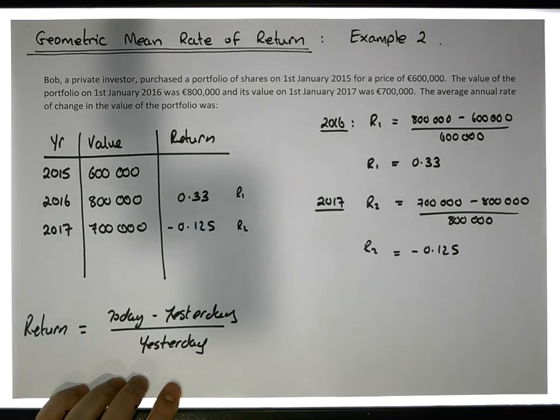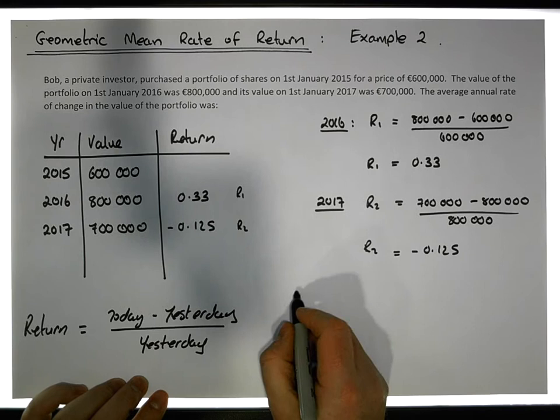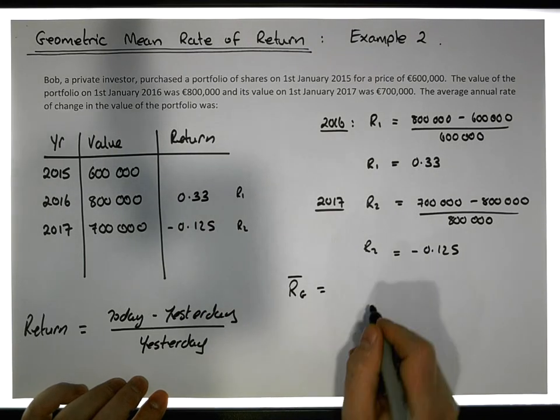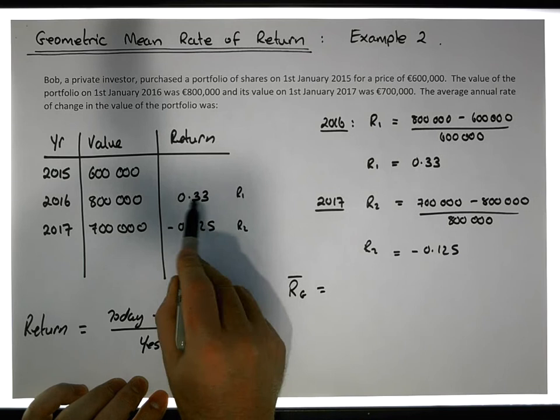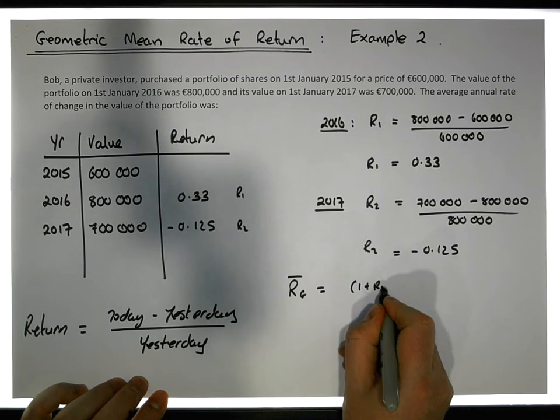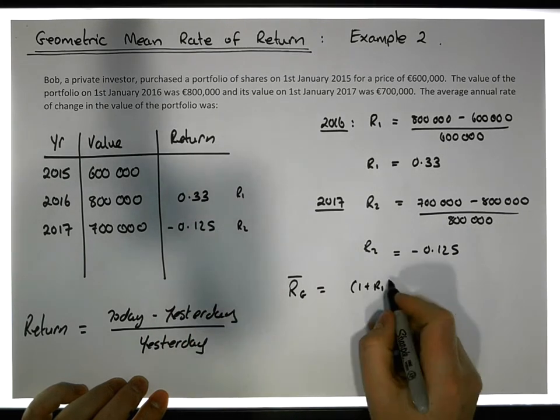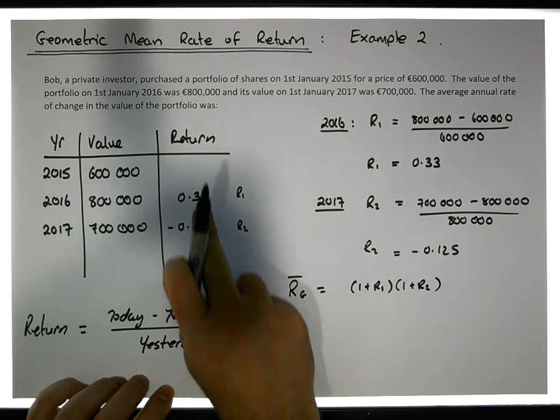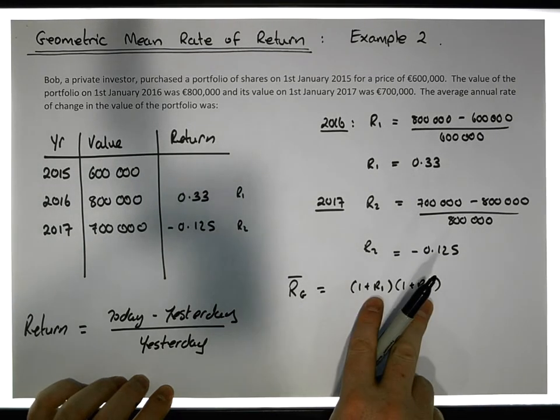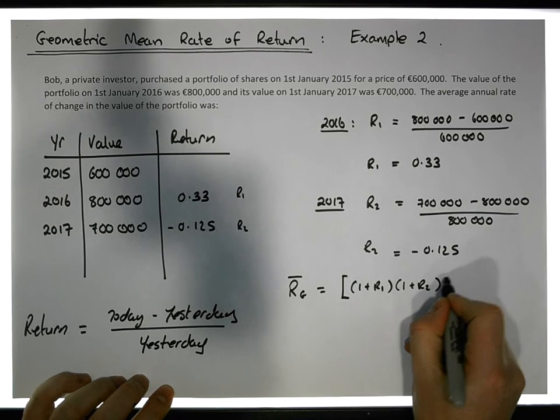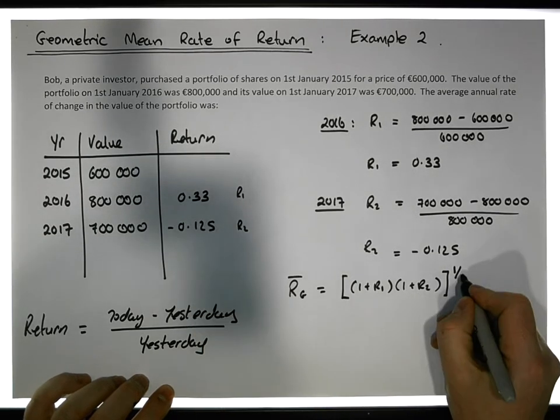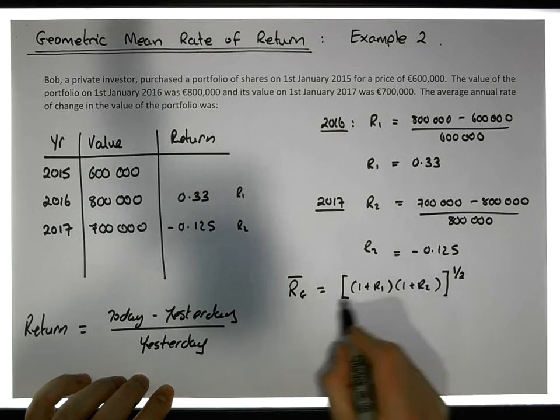Let's calculate this geometric average. The geometric average, r̄g, is: we add one onto each return, so it's (1 + r1) multiplied by (1 + r2), and we get the product of them. That's all raised to the power of 1/n. We have two returns, so it's raised to the power of a half, and then we take one away.